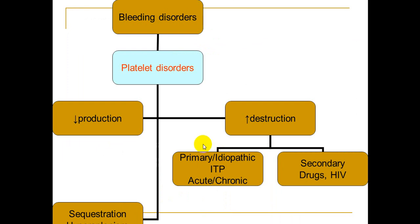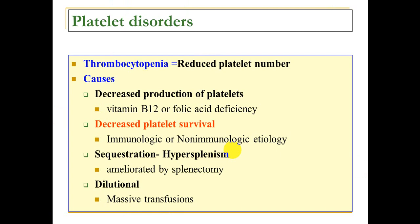Platelet disorders include either decreased production such as bone marrow failure or hypersplenism, or increased destruction such as primary idiopathic immune thrombocytopenia (ITP). Thrombocytopenia means platelets below normal, usually below 100. Causes include decreased platelet production from vitamin B12 or folate deficiency, decreased platelet survival, immunological causes with ITP at the top of the list, and sequestration from hypersplenism especially in chronic liver disease.